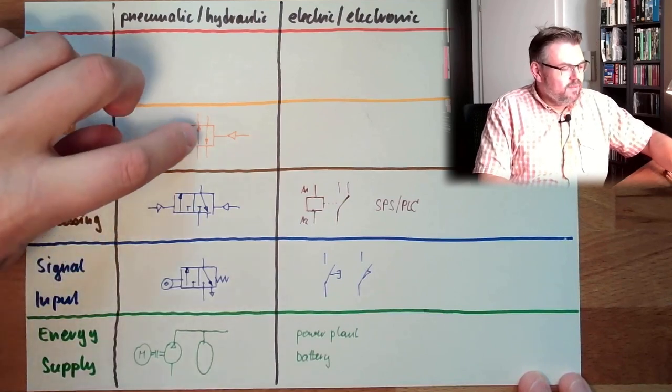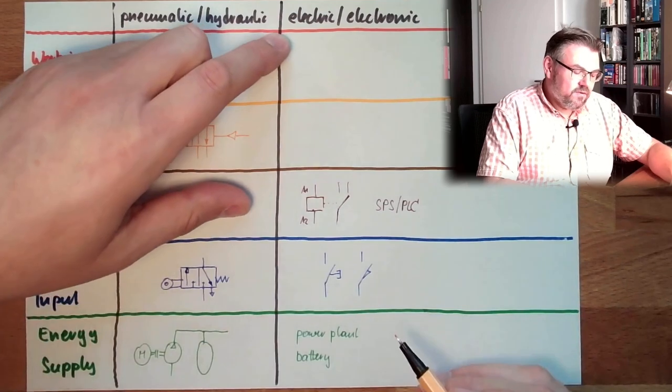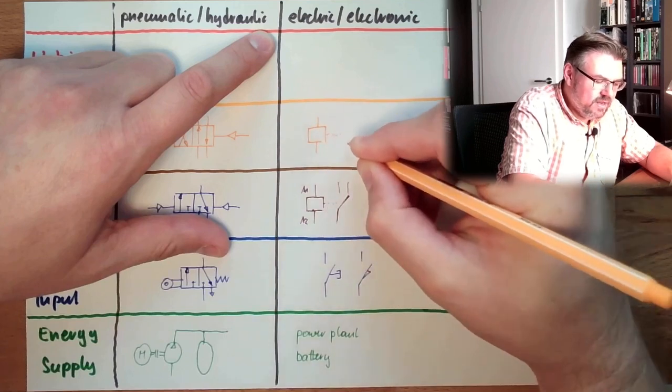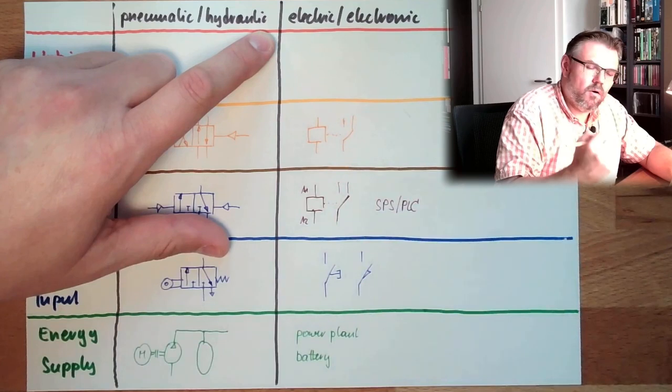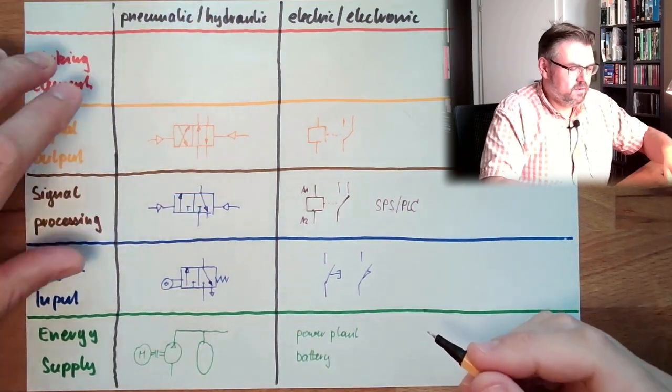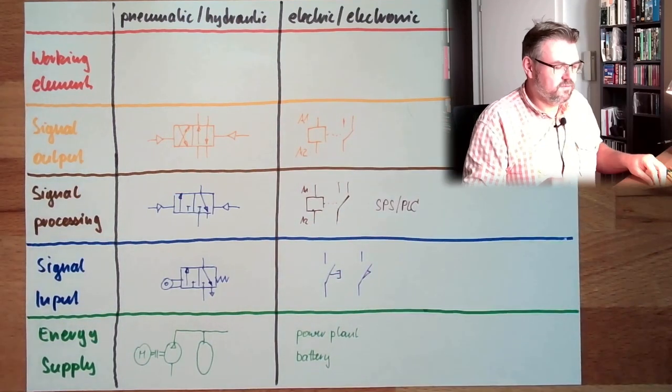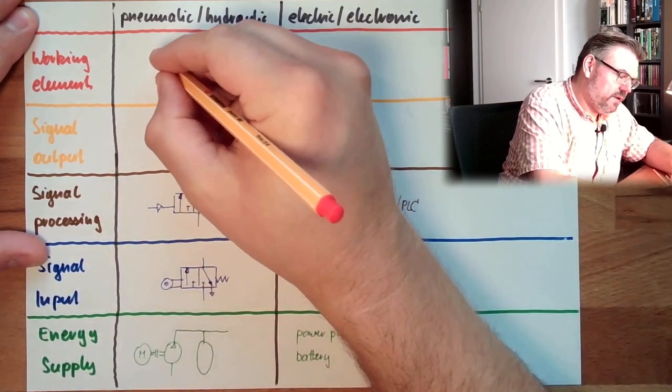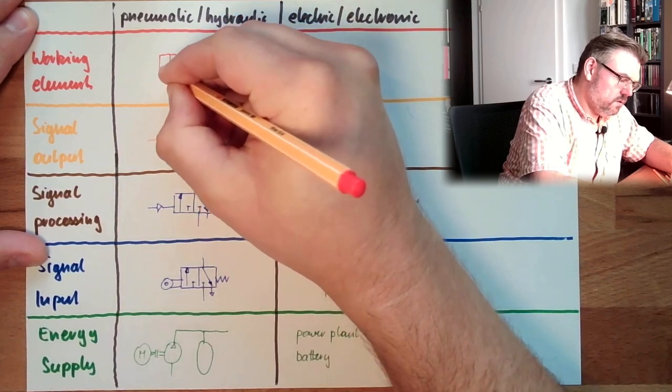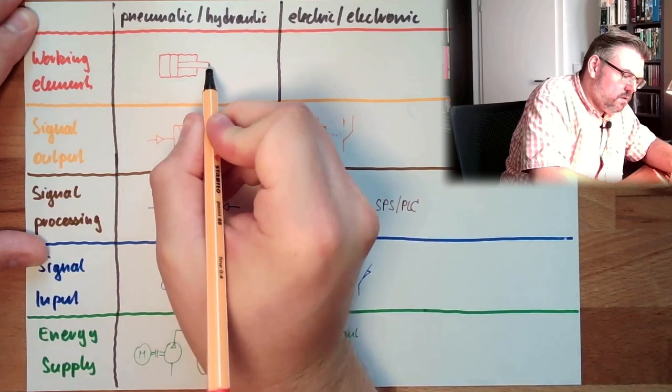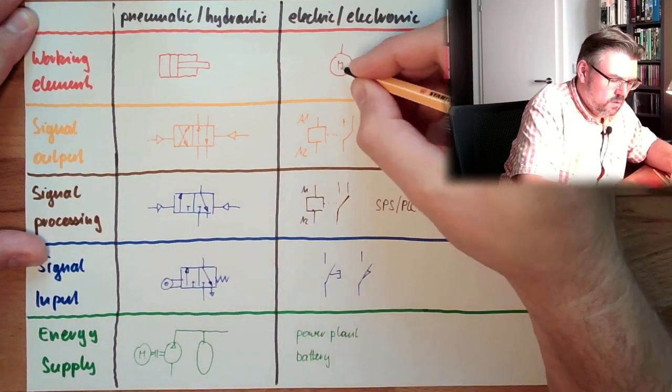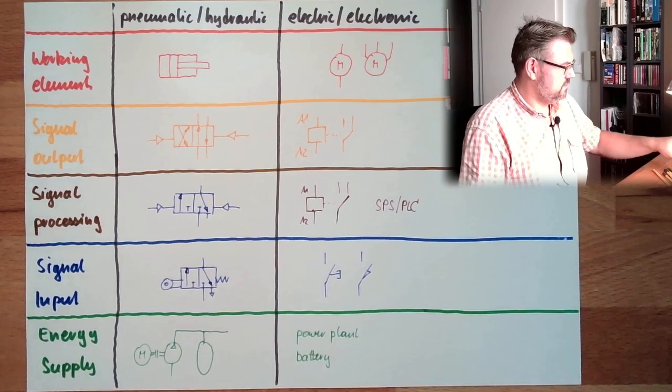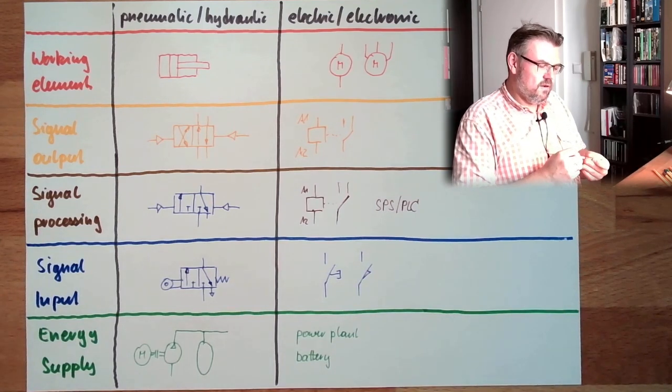Signal output. This signal output is then driving the working element. In electric, electronic things, the signal output is usually a contactor. Basically a relay with quite some power. Big relay. Contactor, relay, depending on the size of the thing. Now, the working element. Very usual working element in pneumatic and hydraulic is a cylinder. And here we usually have a motor, one-phase, three-phase motor, something like this. So these are the things.